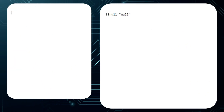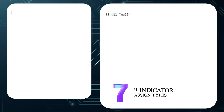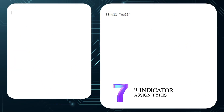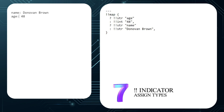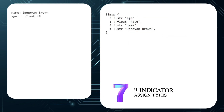Number 7: You can assign a type to a value using double exclamation marks followed by the type. For example, I can change my age from the default integer to a float so I can report that I am 48 and a half years old.